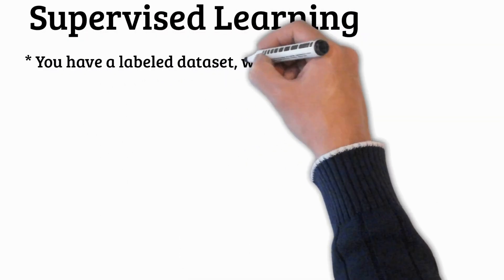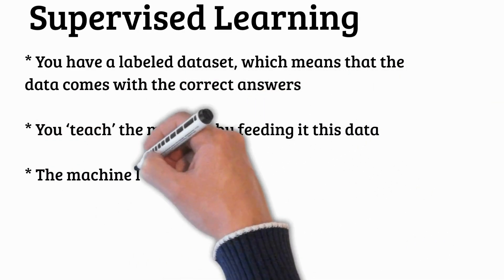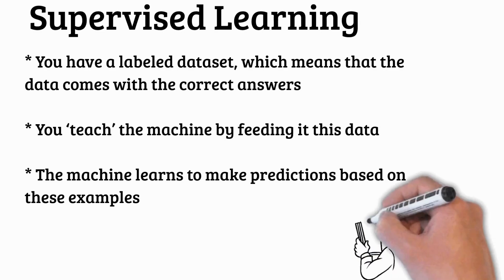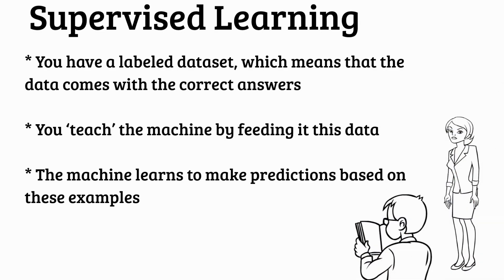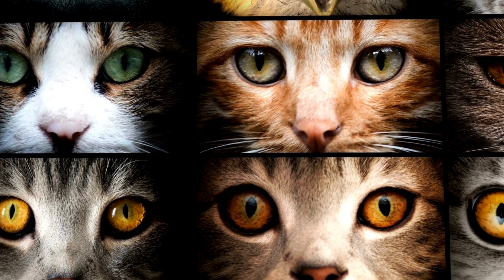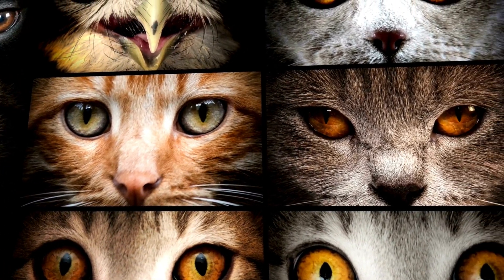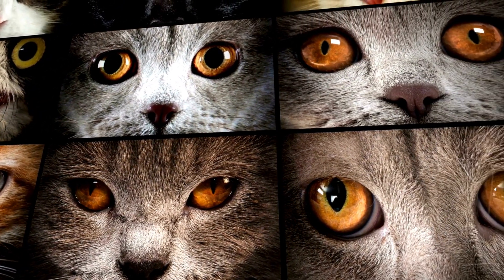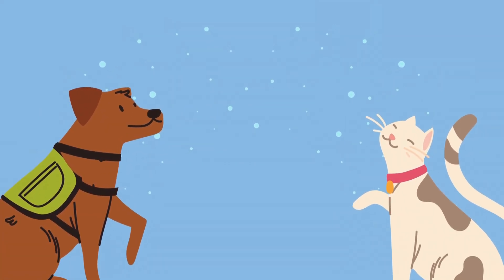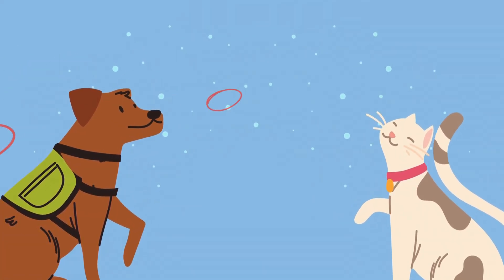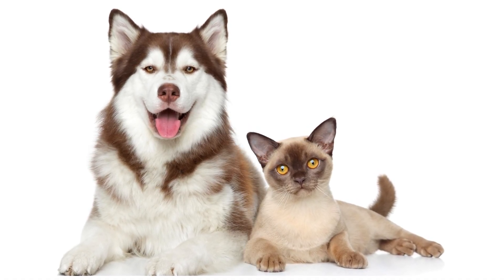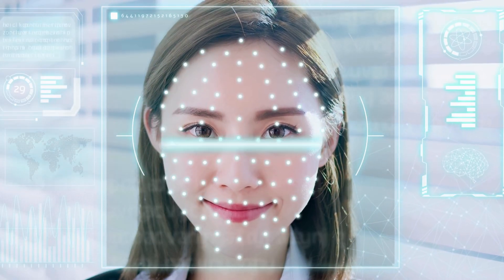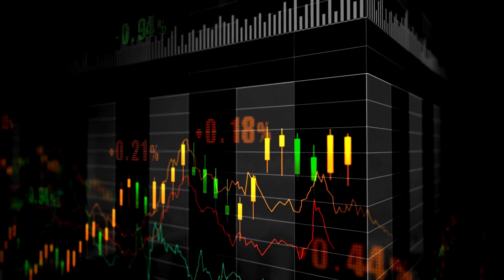Think of supervised learning as a teacher-student relationship. You have a labeled dataset — meaning the data comes with the correct answers. You teach the machine by feeding it this data, and it learns to make predictions based on these examples. Imagine teaching your computer to recognize pictures of cats and dogs: you give it thousands of pictures already labeled as cat or dog. The machine learns features like the shape of the ears, the tail, the nose, and can then correctly predict whether a new picture is a cat or a dog. It's like grading homework. Supervised learning is great for tasks like image recognition, email spam filtering, and even predicting stock prices.